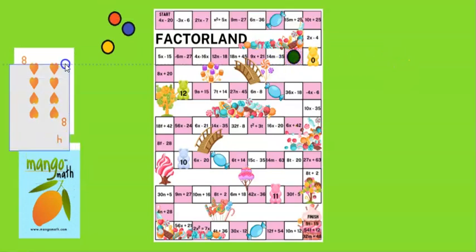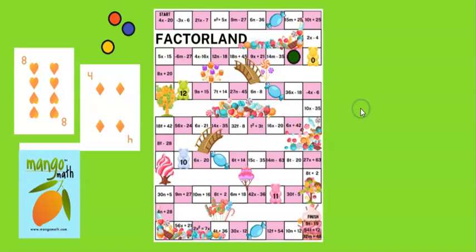The next student goes and they have drawn a four. They are going to look and see what's the greatest common factor and they see that it's actually the start one, 4x plus 20. The greatest common factor here is four so they're going to put their counter on the four.